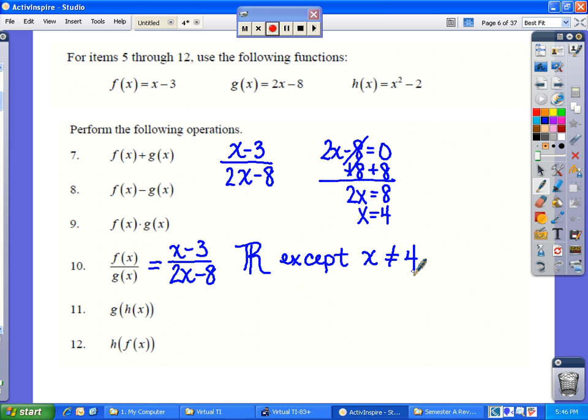Going on to number 11, we're doing g of h of x, which is a composition of functions. Notice that the h of x function is substituted into the g of x function. What I like to do is write my g of x function, 2x minus 8, and it's the x that's going to get replaced, so I put parentheses around the x,